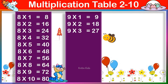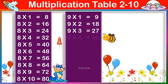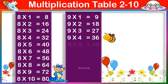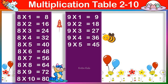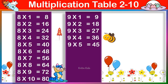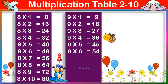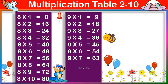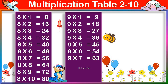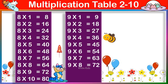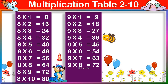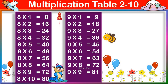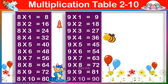Nine three's are twenty-seven, nine four's are thirty-six, nine five's are forty-five, nine six's are fifty-four, nine seven's are sixty-three, nine eight's are seventy-two, nine nine's are eighty-one, nine ten's are ninety.